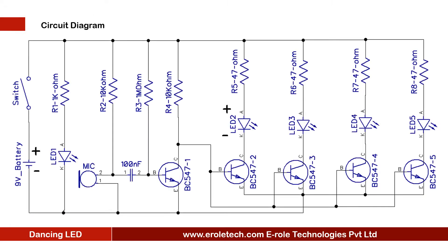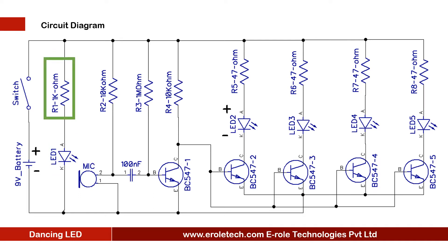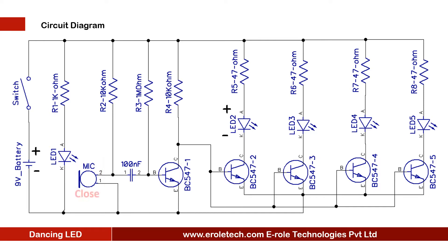Before making the project, we will understand its circuit diagram. This is a 9-volt battery to power up the circuit. This is an on-off switch used to start or stop the project. This is a power supply indication LED with a current limiting resistor to protect the LED from high current and voltage. This is the symbol of a mic — when the mic receives voice, its two ends become short; terminal 1 is grounded.